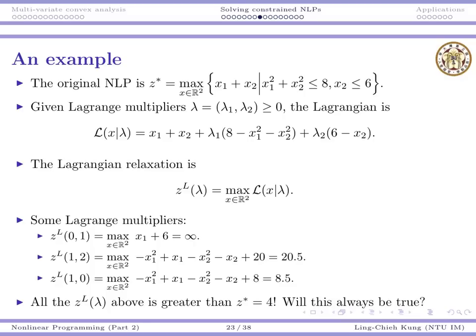Before we tell you the answer, let's think about the following question. I give you a constrained problem. If I simply relax all the constraints, will I do better or worse? Of course, I will do better. And for maximization problem, better means larger objective values. So if I simply relax all the constraints, z star will go up. But here, I am not just relaxing all the constraints. I add them somehow to the objective function. So will this still be always giving us an upper bound?